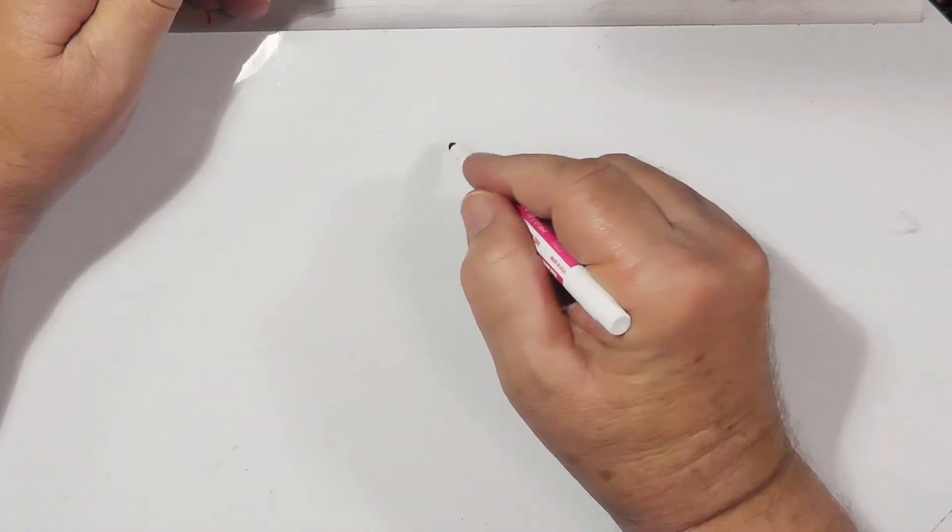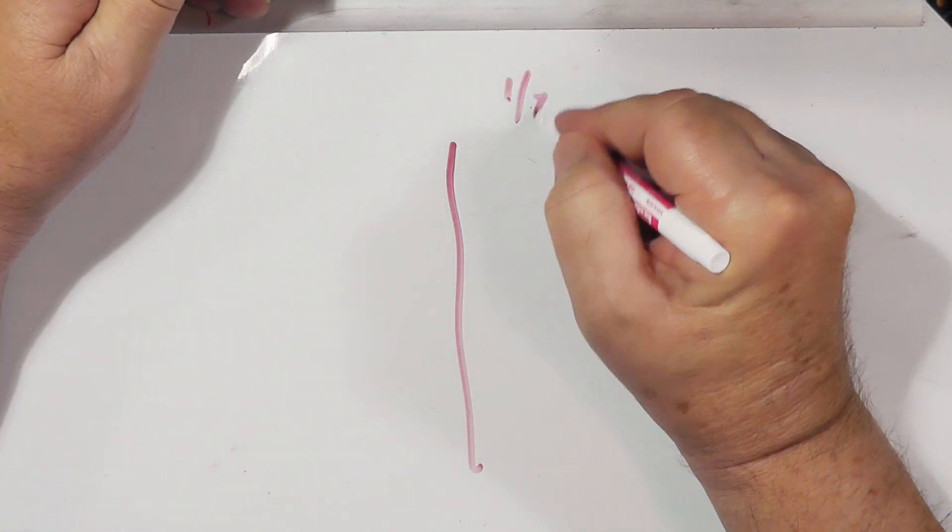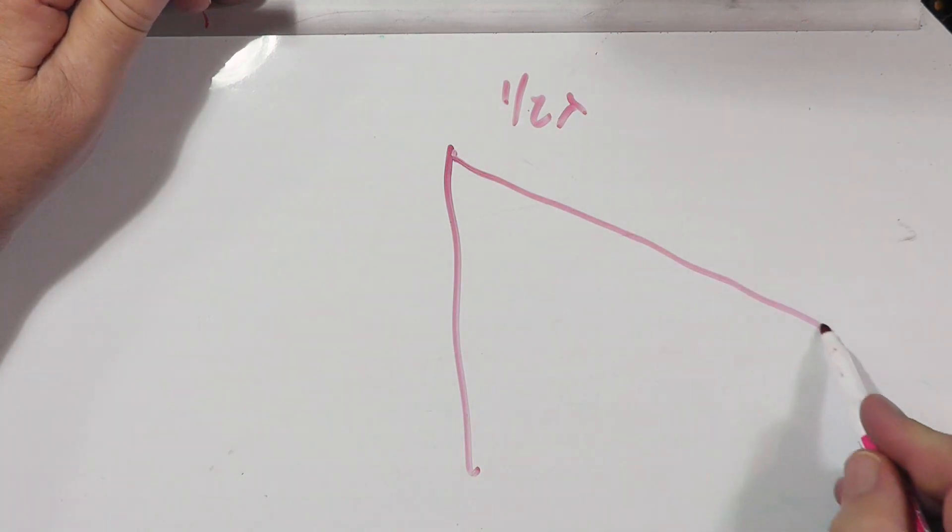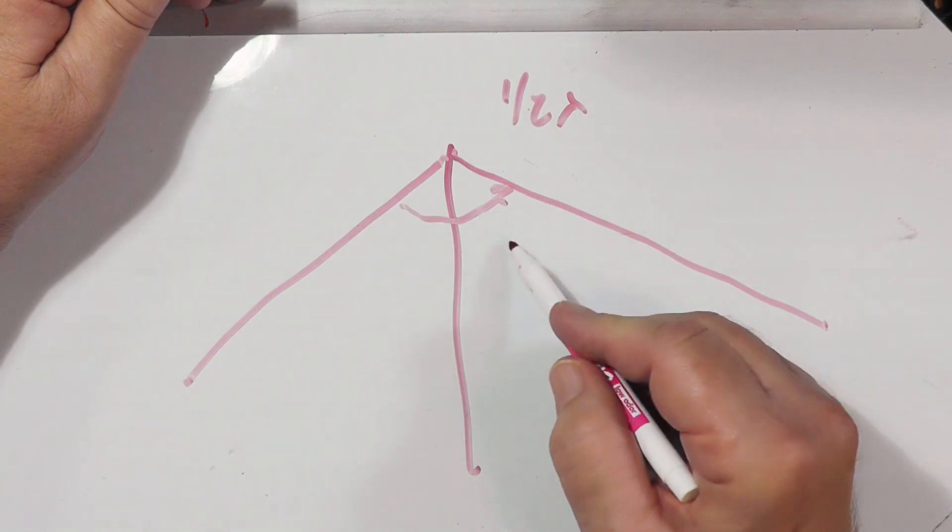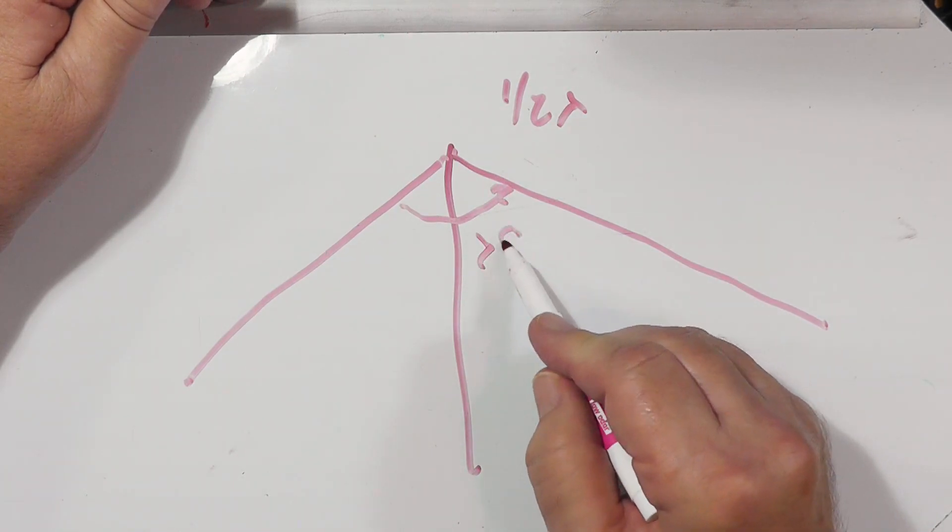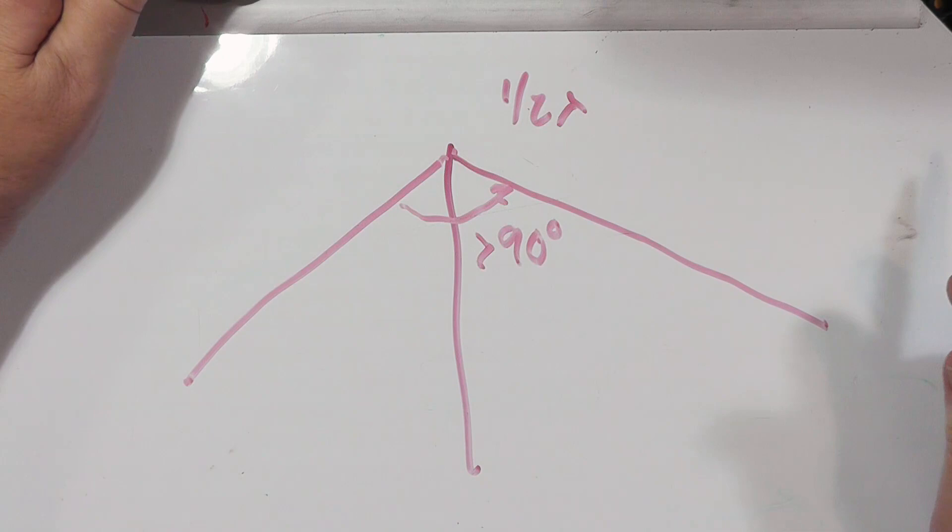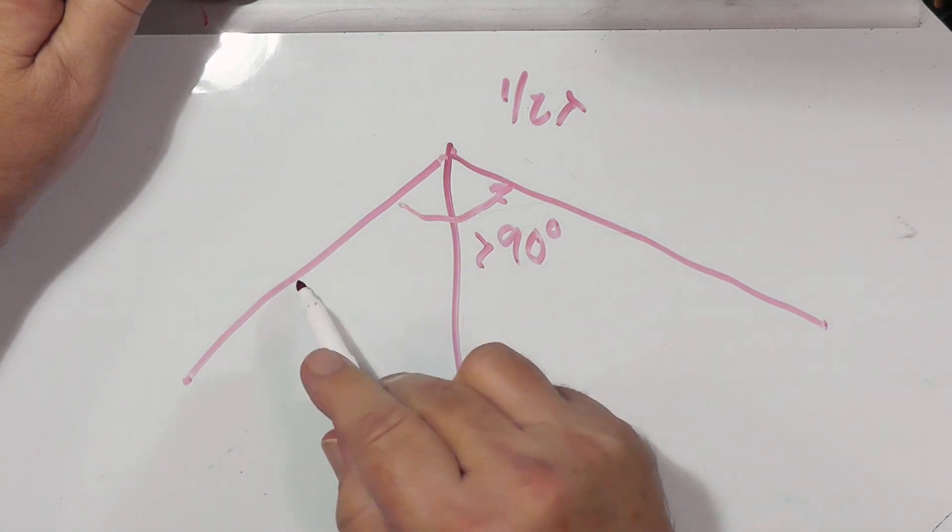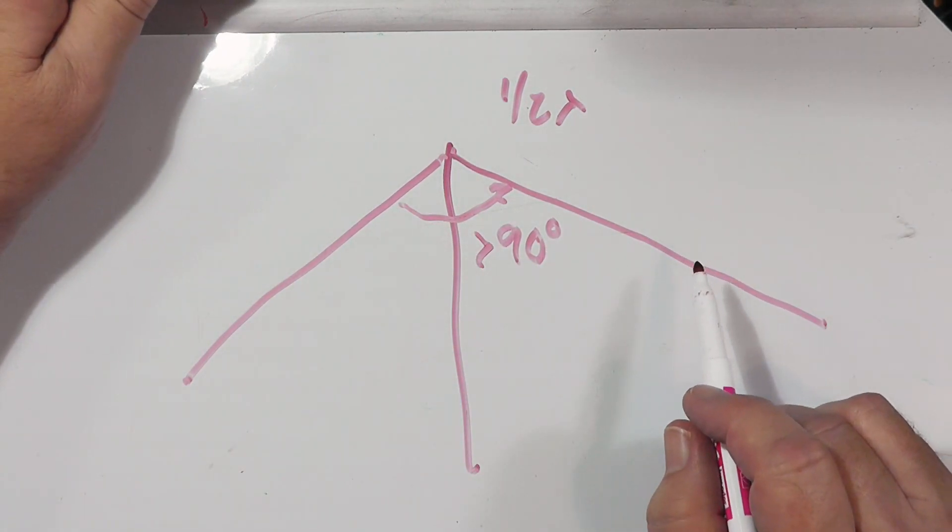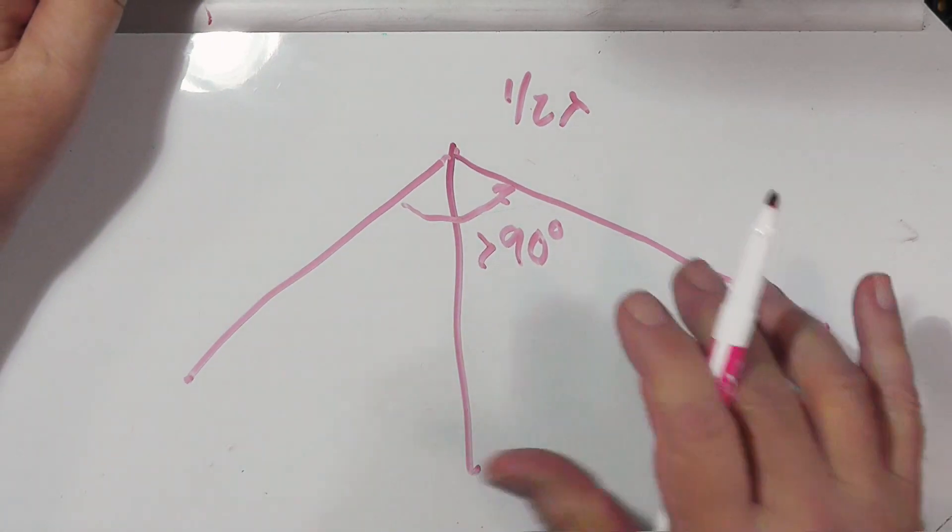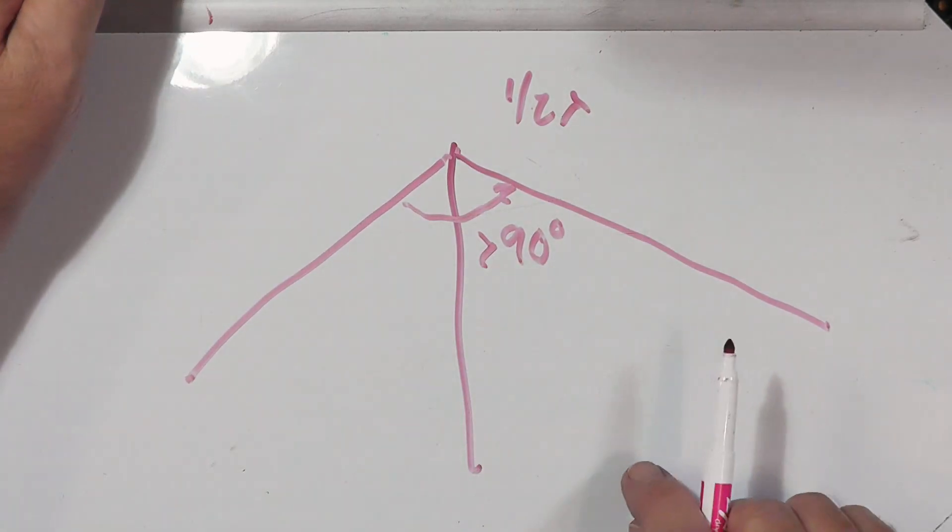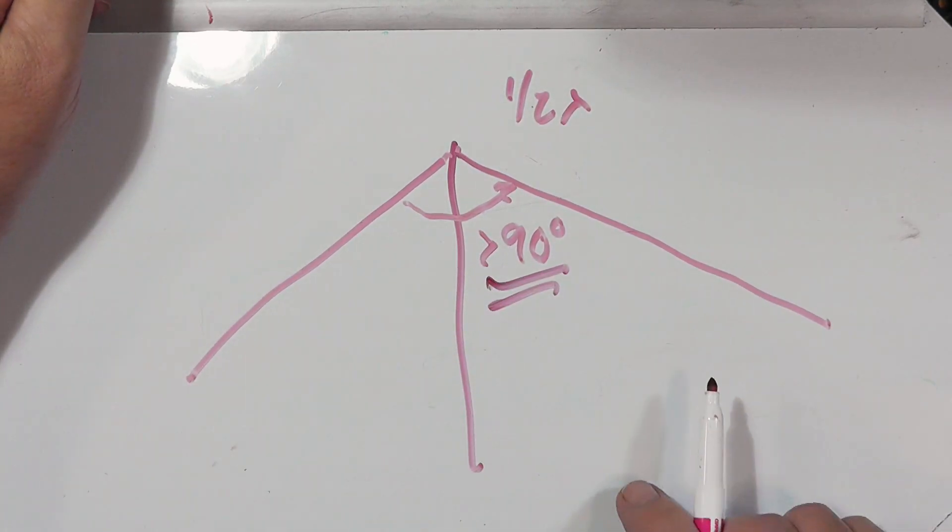Now what would happen if you wanted to get even closer to omnidirectional? Well, put up a pole, half wavelength, and make an inverted V. This angle here should be greater than 90 degrees. Otherwise, the two pieces of wire start to act like they're transmission lines because they're so close, they affect each other.